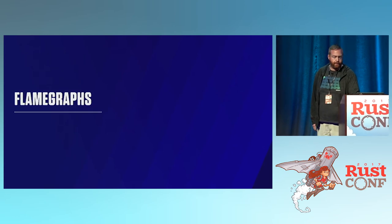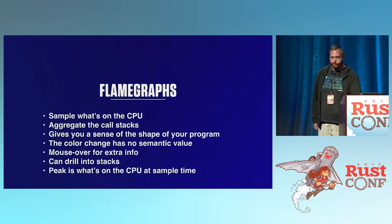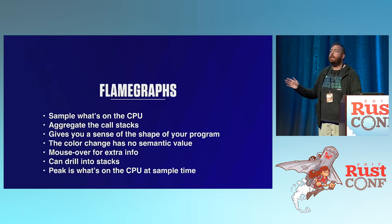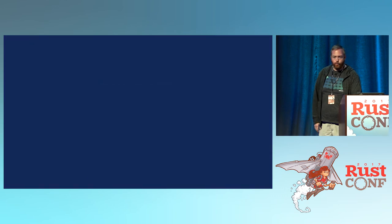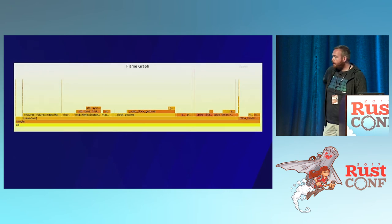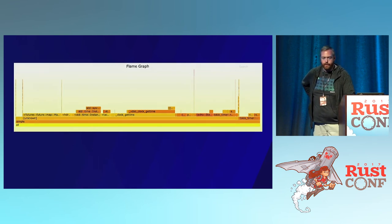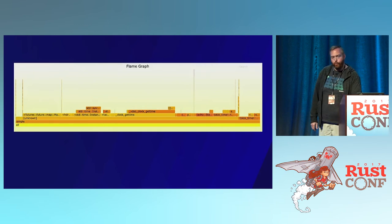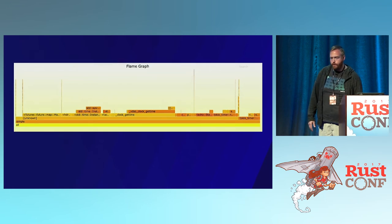One thing we use with Perf is building flame graphs. A flame graph takes a bunch of samples from the sampling profiler and aggregates them to get a sense of the shape of your program. What's on the very top is what was running on the CPU when the sample was taken, and the width of what's below it gives you a sense of how often that was seen in a sample. Here we can see we get a clock, get the time, make an instant, call map on a future — it gives you a sense of your program.